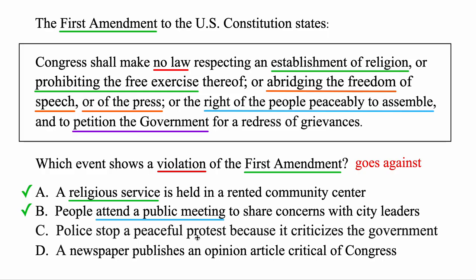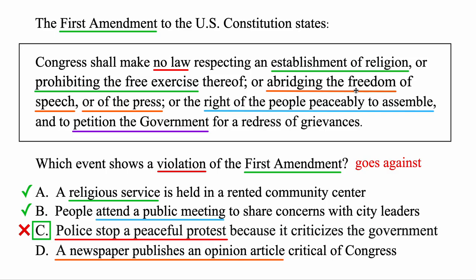The third choice: police stop a peaceful protest because it criticizes the government. If there's a peaceful protest going on, that's fine — but police stopping it is a violation of the First Amendment. That should not be allowed. This is the correct answer. The last choice: a newspaper publishes an opinion article critical of Congress. Newspapers are allowed to publish opinions — most even have an opinion section — and that's protected under freedom of the press. Criticizing the government is also protected; they may just be petitioning or asking the government to act.